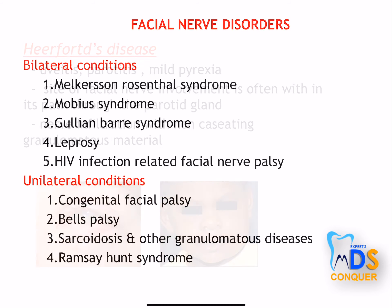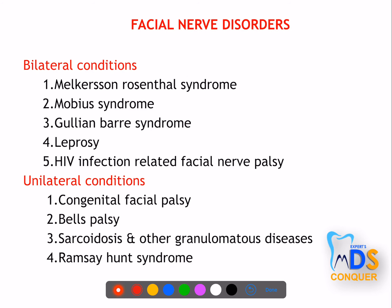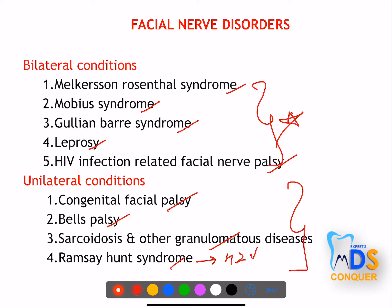Facial nerve disorders can be bilateral or unilateral. Bilateral: Möbius syndrome, Guillain-Barré syndrome, leprosy, and HIV-related facial nerve palsy. Unilateral: congenital facial palsy, Bell's palsy, sarcoidosis (Heerfordt's disease), and Ramsay Hunt syndrome due to herpes zoster virus. A memory aid: Bell's palsy is unilateral, sarcoidosis is unilateral, and Ramsay Hunt is classically unilateral due to herpes zoster.